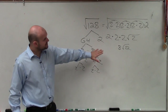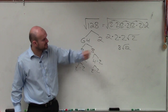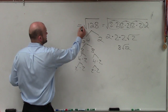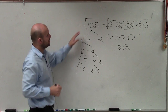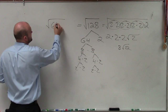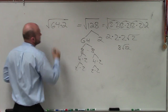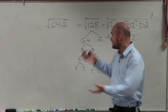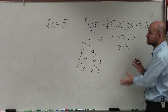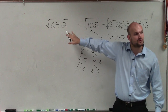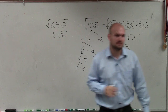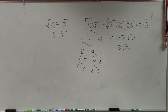Now let's look at the other way to do this, which I think is much easier. If you notice that 64 divides into 128, you can rewrite it as the square root of 64 times 2. You can always do prime factorization if you can't figure it out, but I always like to rewrite it with a perfect square number, because I know the square root of 64 is 8. So the answer is 8 square root of 2.